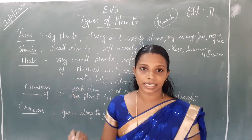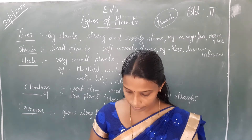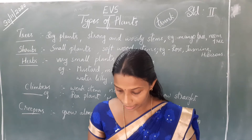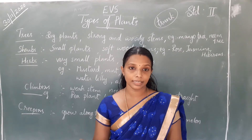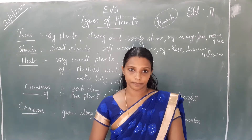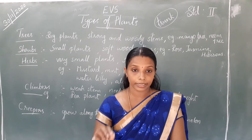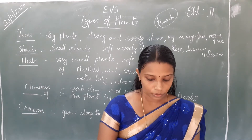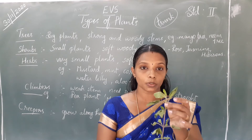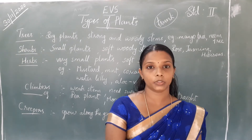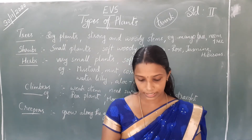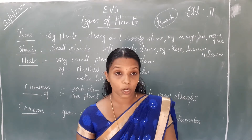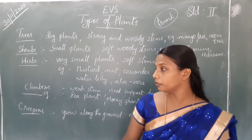Next type: herbs. H-E-R-B-S. Herbs are very small plants. They have a thin, green, and soft stem. Examples include tulasi plant, panikurka, spinach, water lily, lotus, and aloe vera. These are examples for herbs.